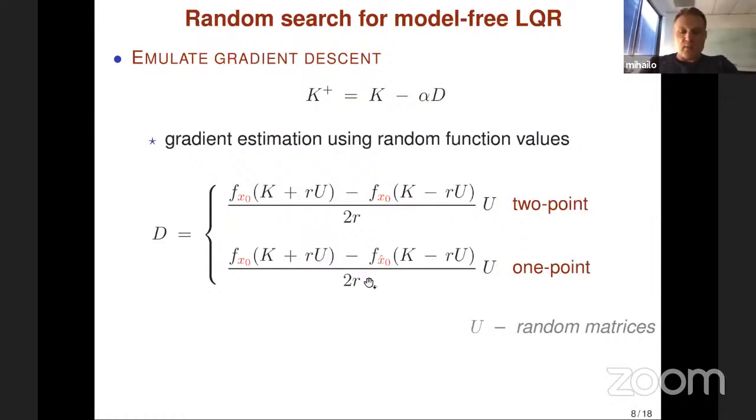In contrast, in one-point estimate, you can evaluate the objective function at one particular gain for one initial condition. There is significant difference between them.